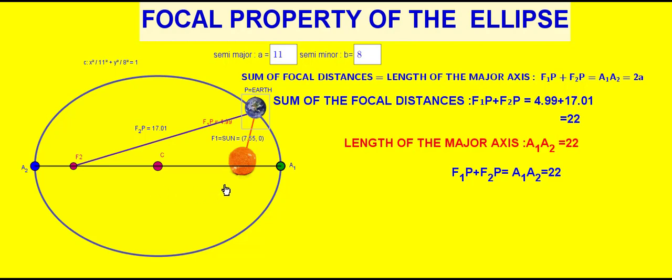Here, c is the center, f1, f2 are focus, a1, a2 is the length of the major axis and p is any point on the ellipse.